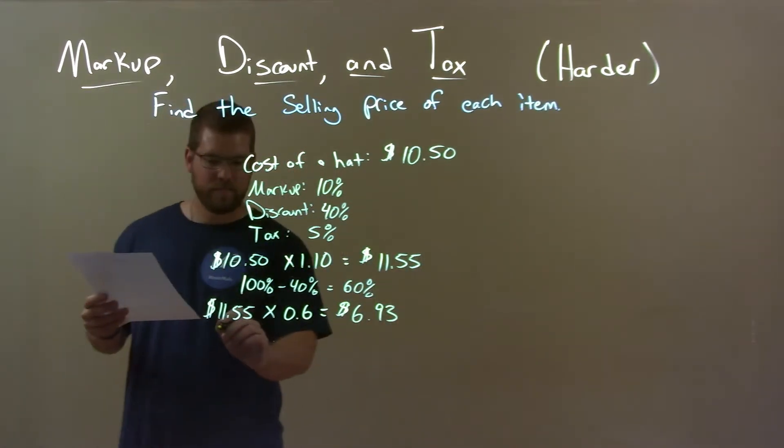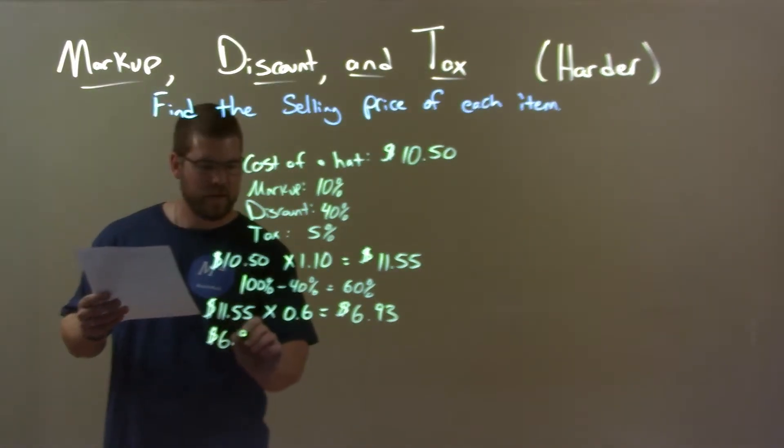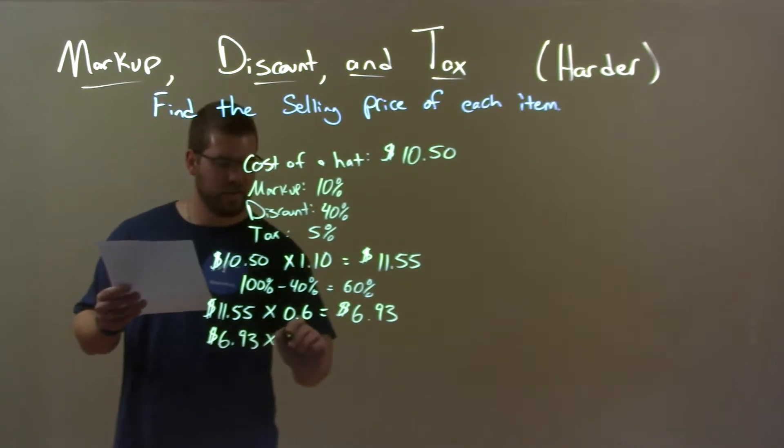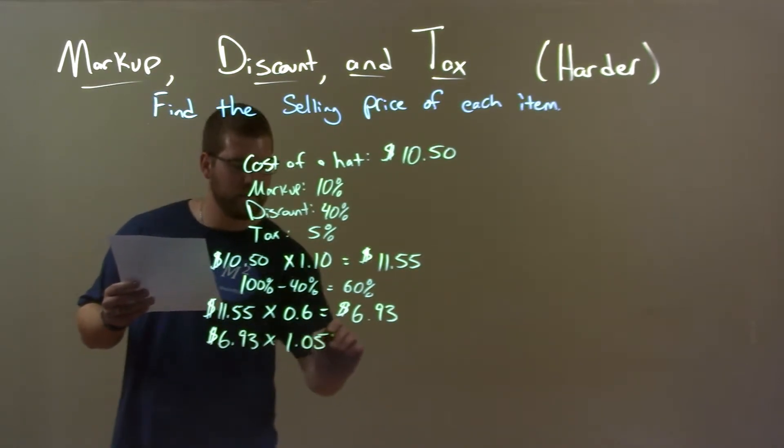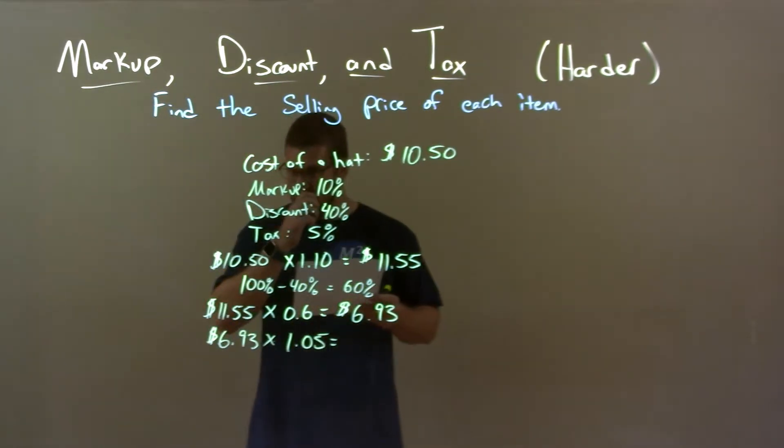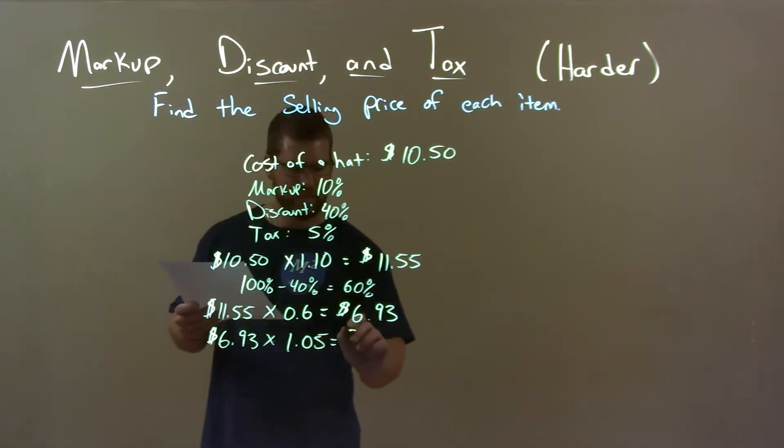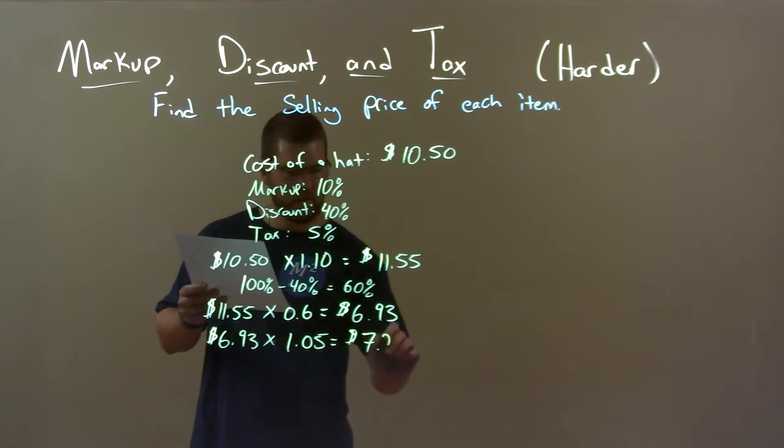Now we apply the tax. Well, $6.93 times a 5% tax, or 1.05, gives us an after-tax price, and discount and markup, all that stuff together, of $7.28.